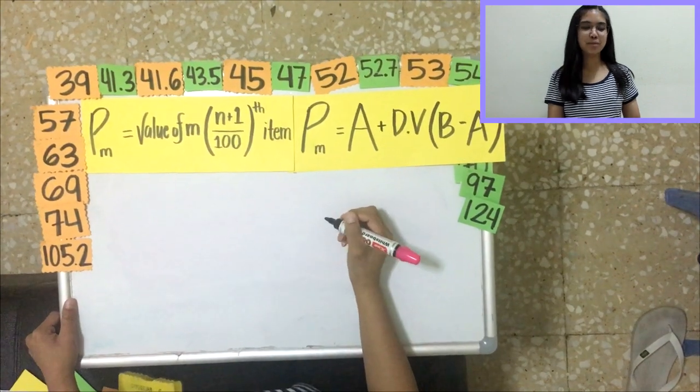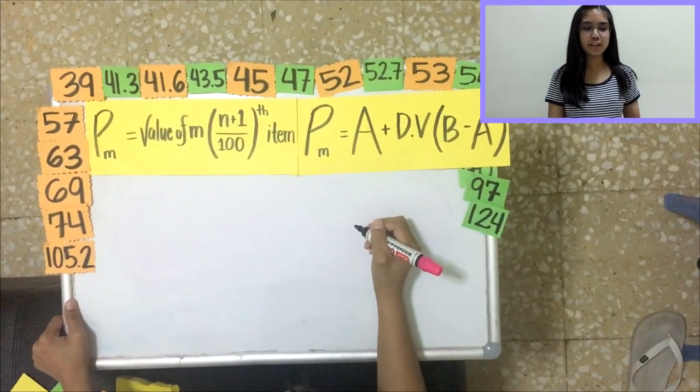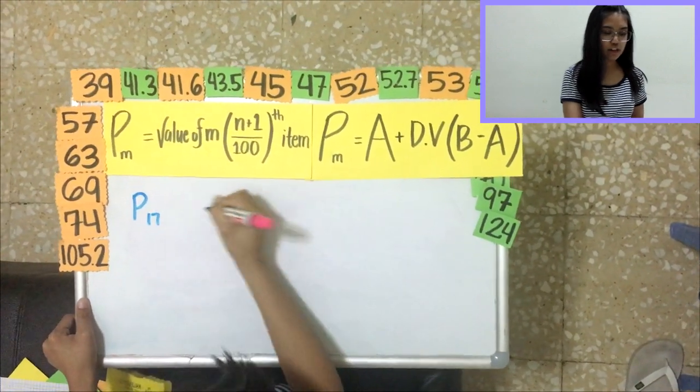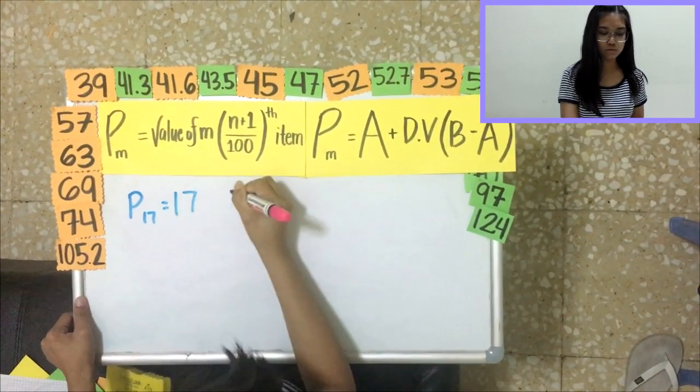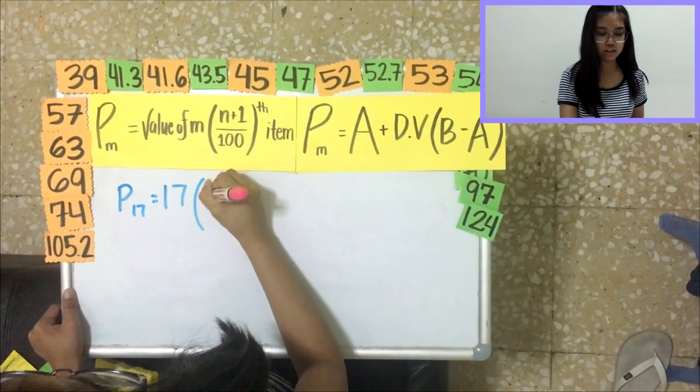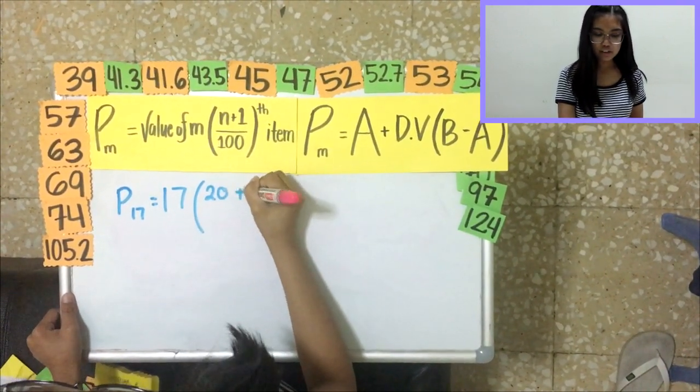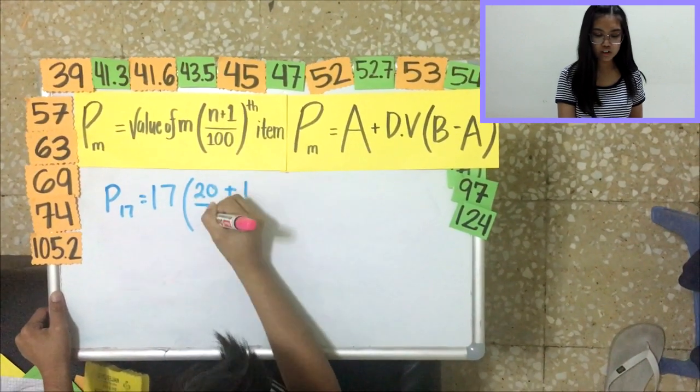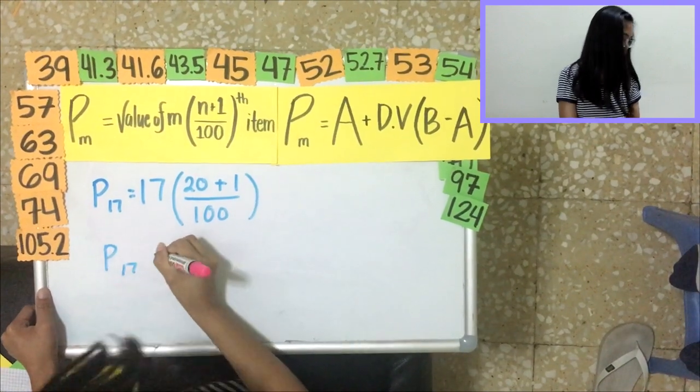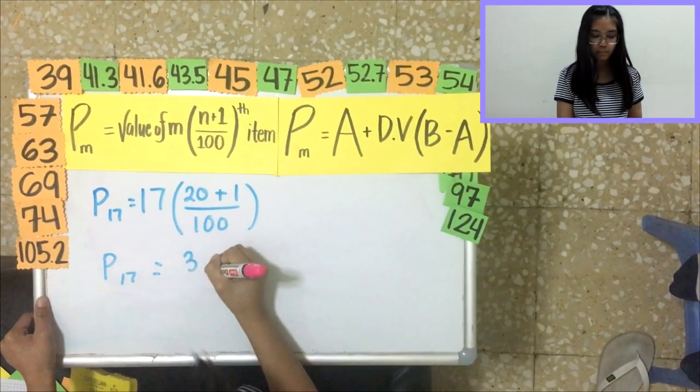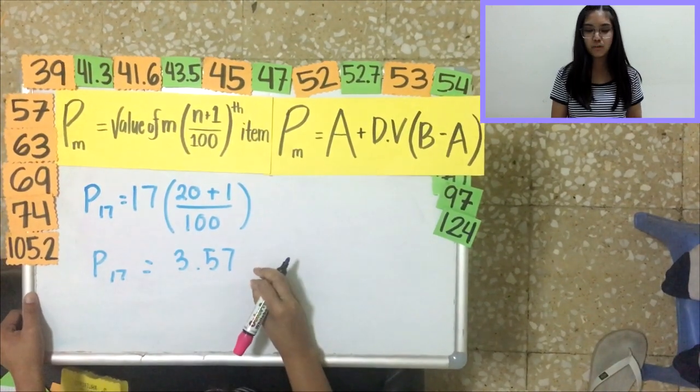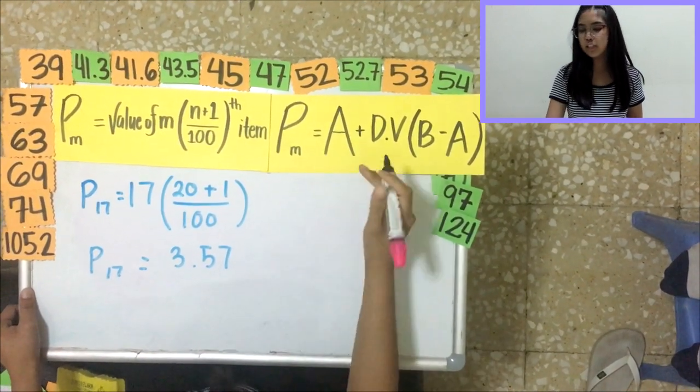Okay. And now, for our new problem. This time, we're trying to find the 17th percentile. The value of M would be 17, then. And our N is 20, as you remember from earlier. It's 1 over 100. So the answer to P17 right now is 3.57. As you noticed, it had a decimal value, so we're going to move on to our second formula.